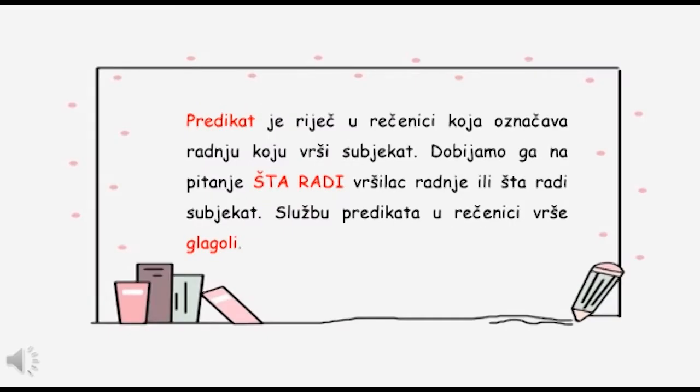Predikat je riječ u rečenici koja označava radnju koju vrši subjekat. Dobijamo ga na pitanje šta radi vršilac radnje, odnosno šta radi subjekat. Službu predikata u rečenici vrše glagoli.